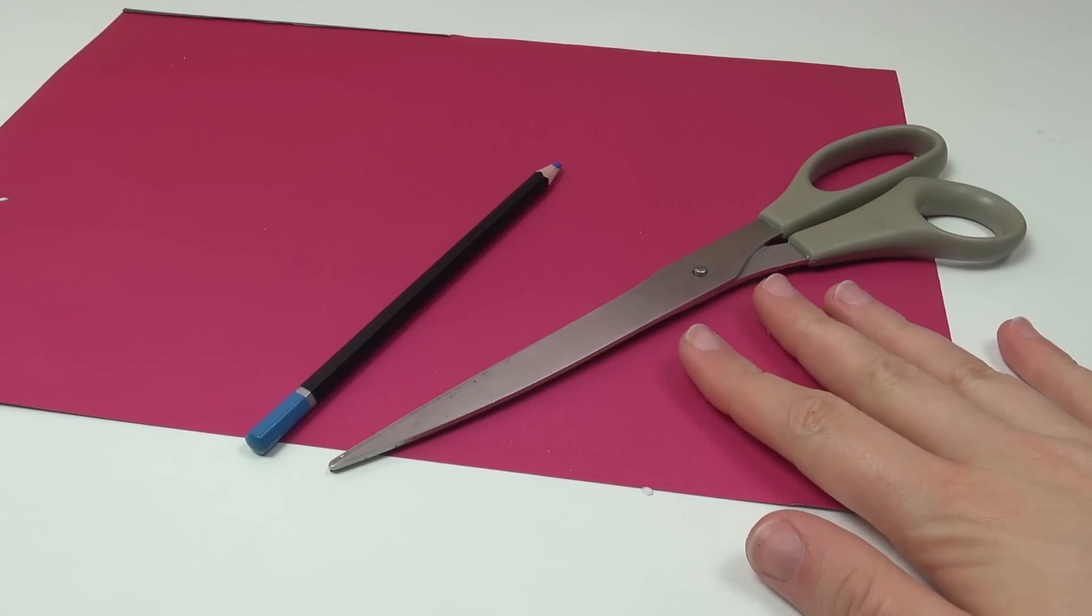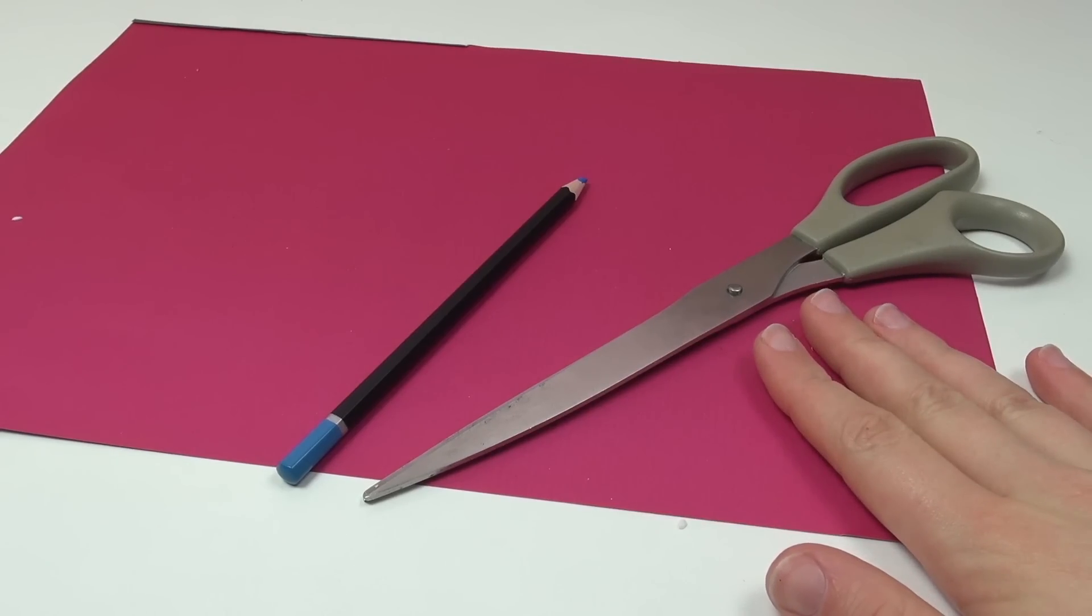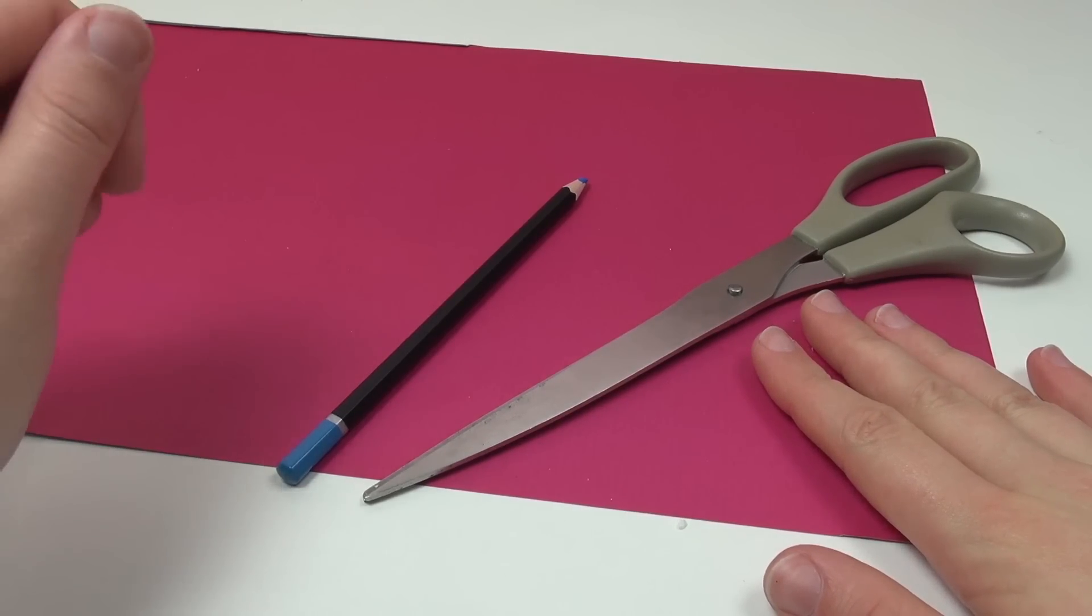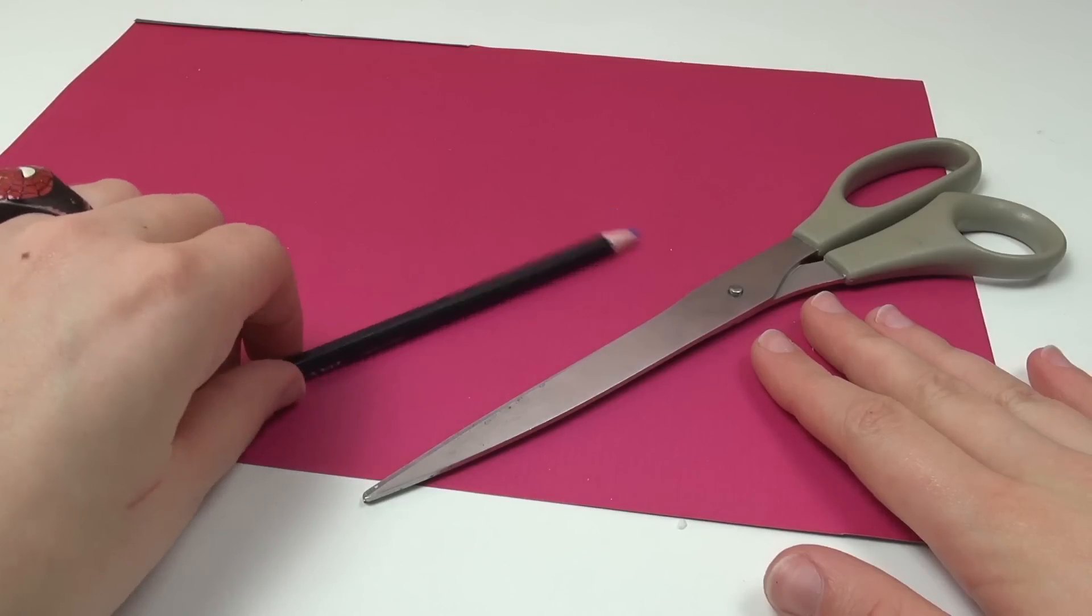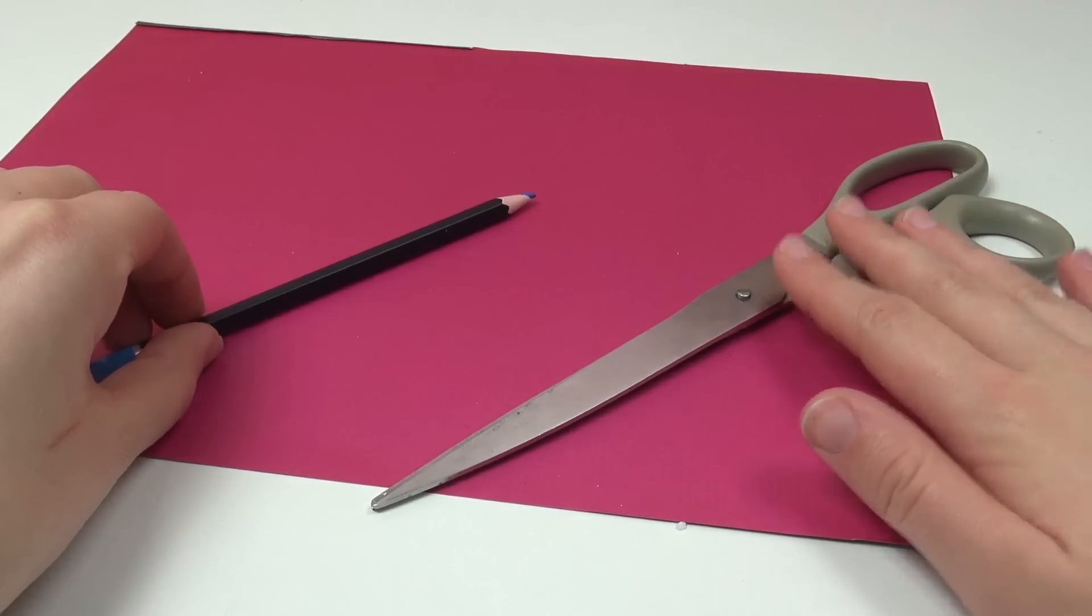So we need paper. I've got paper with two sides like pink and black colored. We've got a pencil and scissors.